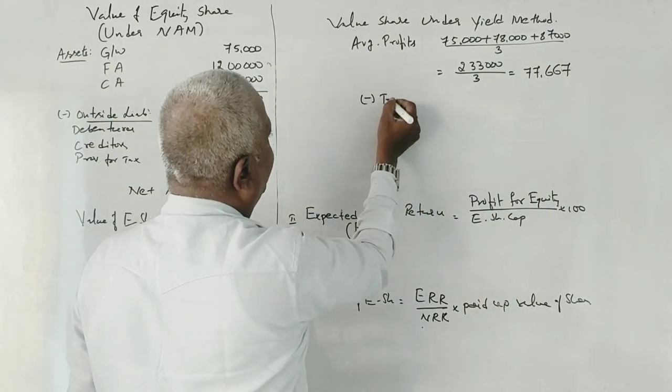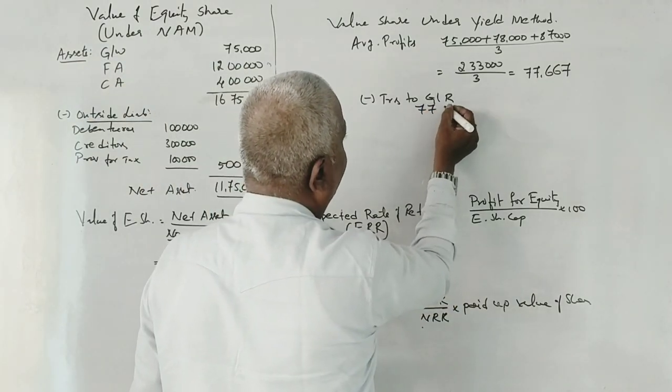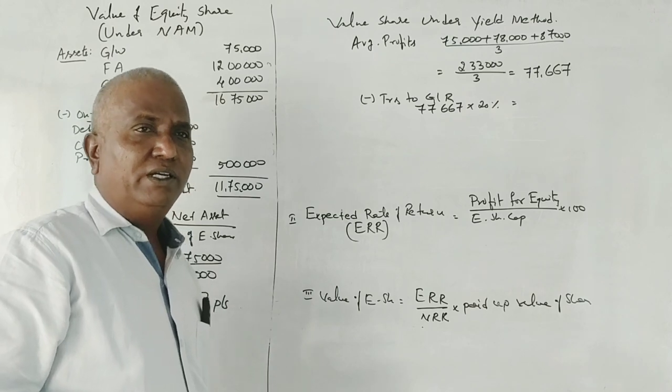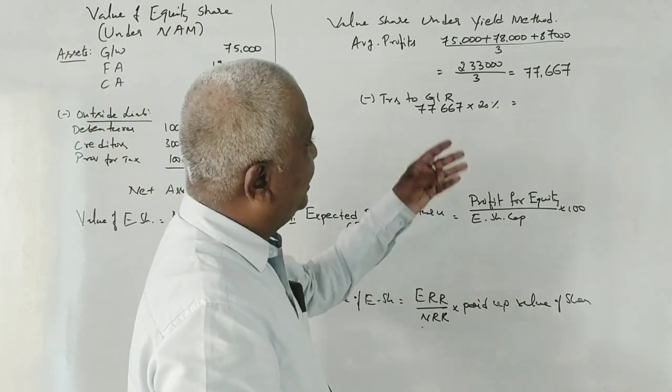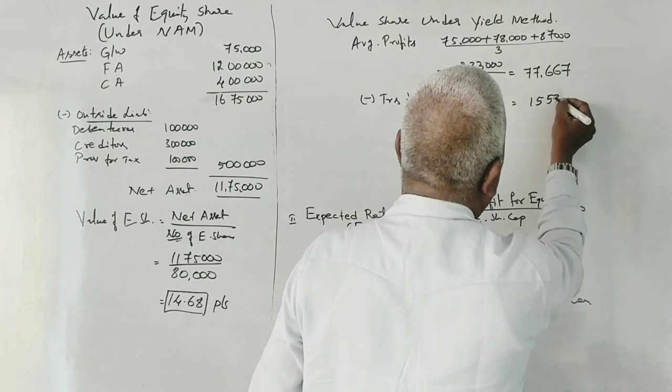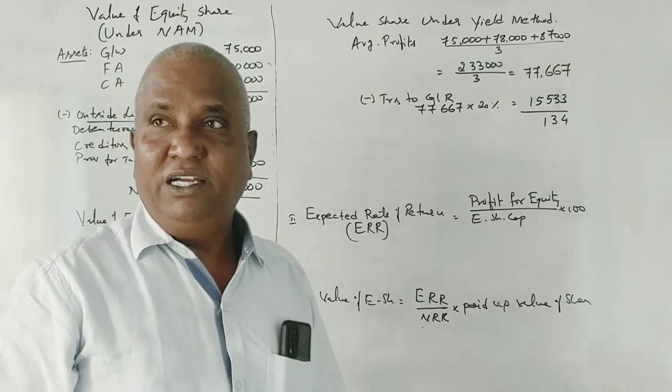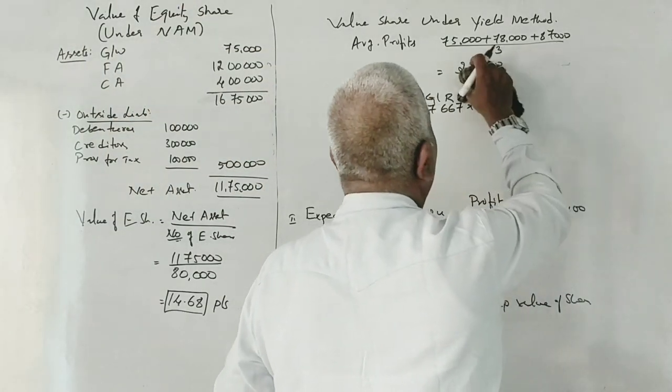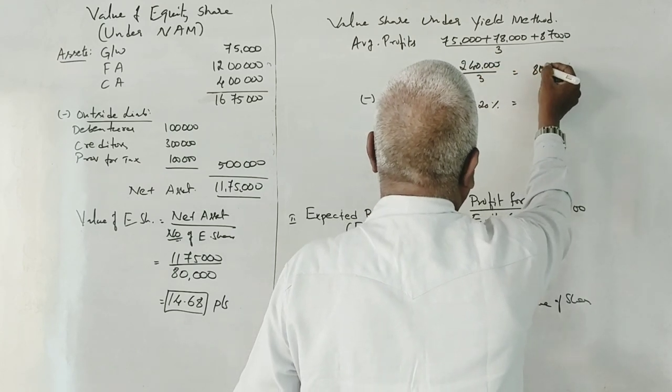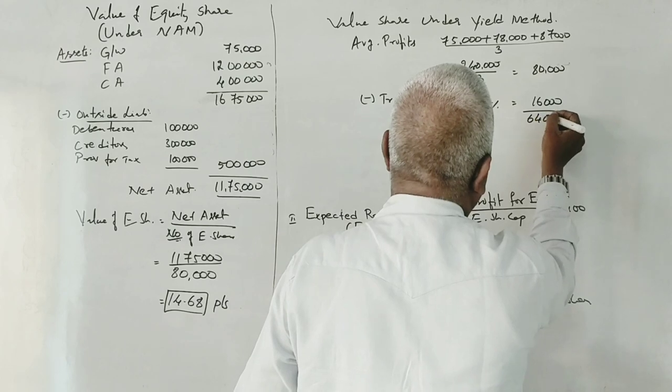From 80,000, we deduct 20% for reserves, which is 16,000. That gives us 64,000 as profit available for equity shareholders.